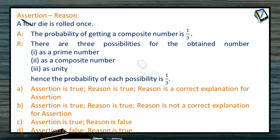Next, let us go to a question which is an assertion-reason type. The assertion is given as the probability of getting a composite number is 1/3, and the reason for that is there are three possibilities of obtaining the number: as a prime number, as a composite number, or as unity. Hence the probability of each possibility is 1/3. Let us find out which option is correct: whether assertion is true, reason is true, or is it a correct or incorrect explanation.